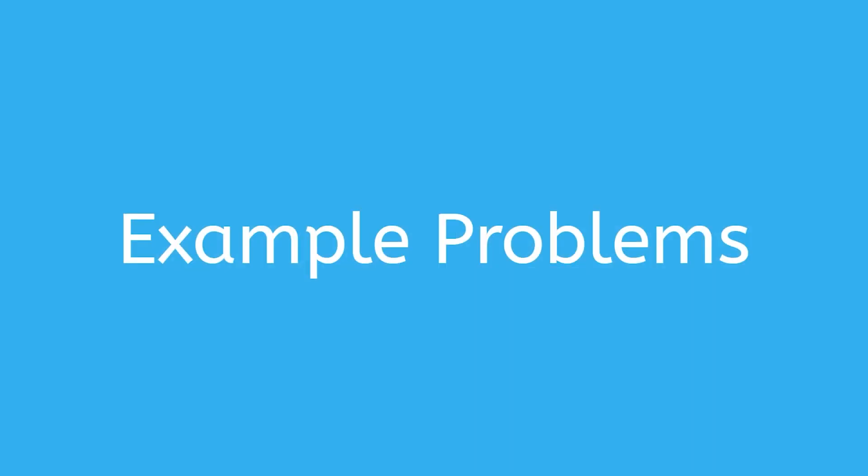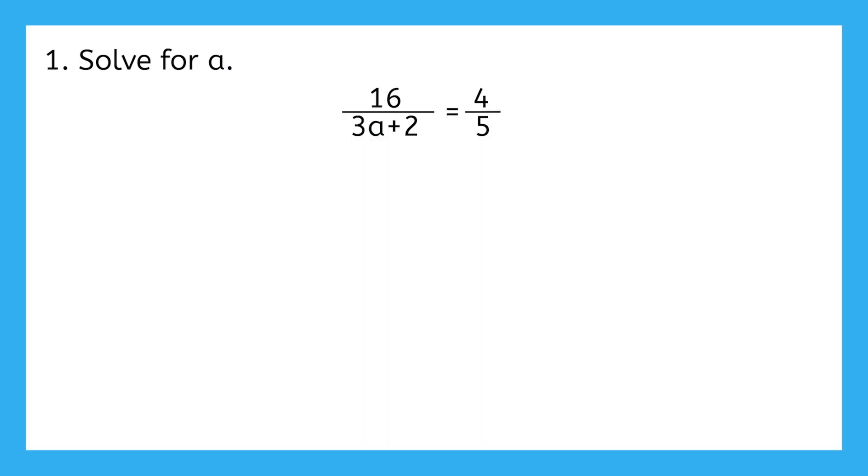Let's take a look at a couple of more complicated proportions with some example problems. In this example, we have to solve for a in the equation 16 over 3a plus 2 equals 4 over 5. We could totally handle this. My goal is to solve for a, and I can't do that if it's stuck in the denominator. So how can I get that whole 3a plus 2 expression out of the denominator?